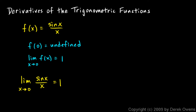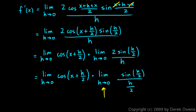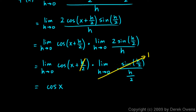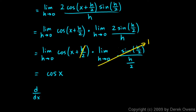We said that the limit as x→0 of sin(x)/x = 1, and that's what we have here: the limit as h→0 of sin(h/2)/(h/2) = 1. So that entire factor becomes 1. We're left with just the limit as h→0 of cos(x + h/2). Letting h go to zero, the h/2 disappears, and we're simply left with cos(x). We have now shown that the derivative of sin(x) is cos(x).